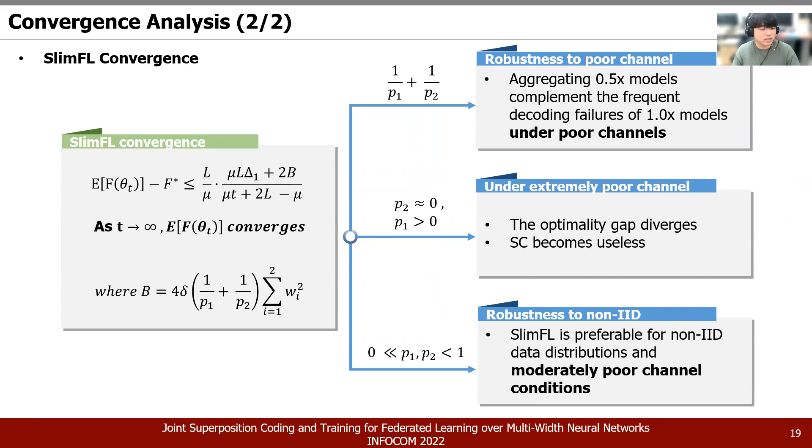Therefore, we can learn that the decoding success rate of 1x model at poor-channel condition will be extremely low, and it can be complemented by increasing the frequency of 0.5 model, half model. This shows that the performance of this model is robust even in poor-channel conditions. Let's examine the situation where full model is almost impossible to decode because of bad communication stations. This means that P_2 equals 0 and P_1 is larger than 0, and in such conditions, B diverges. Finally, we discussed delta which is parameter related to non-IID environment. By looking at the equation, we can know that the model is robust against non-IID data even if channel condition is moderately poor.